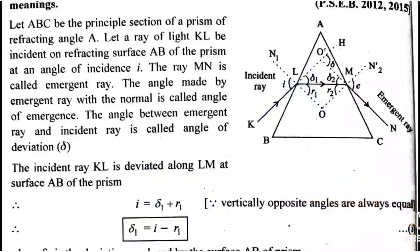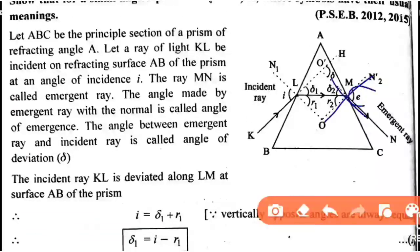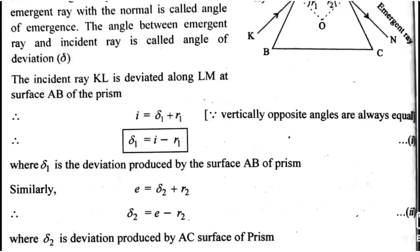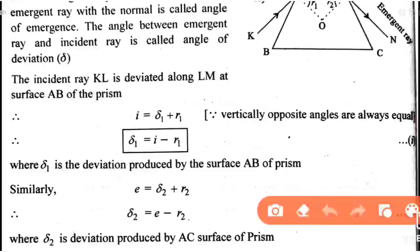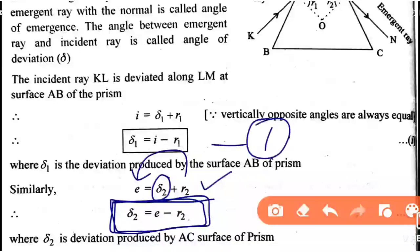Similarly, we find delta-2. At the second surface, e = delta-2 + r2. Rearranging, delta-2 = e minus r2. This is equation number 1 (delta-1 = i - r1) and equation number 2 (delta-2 = e - r2).